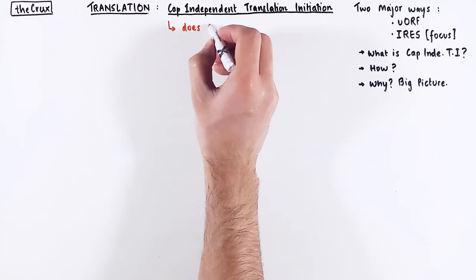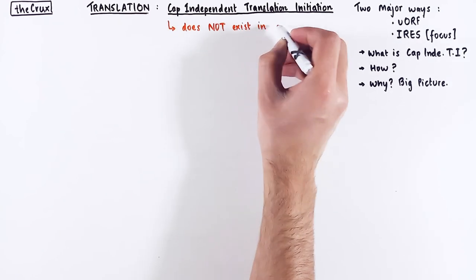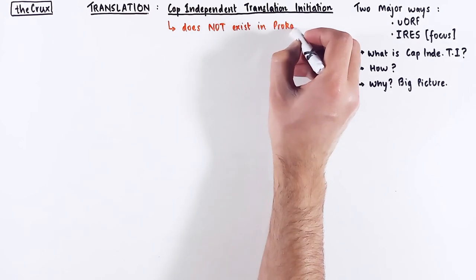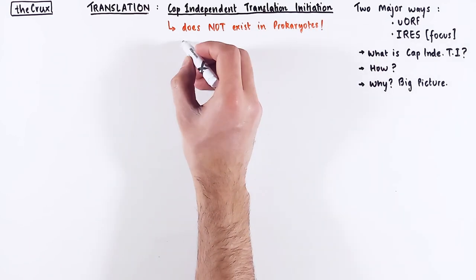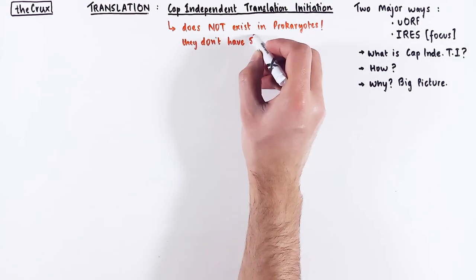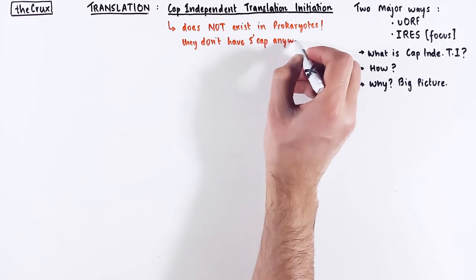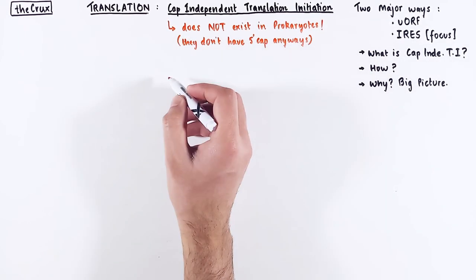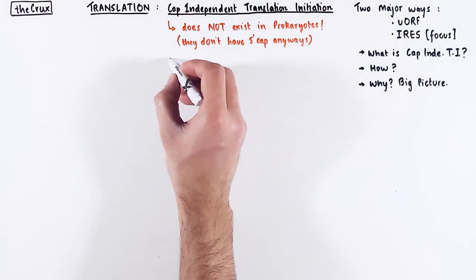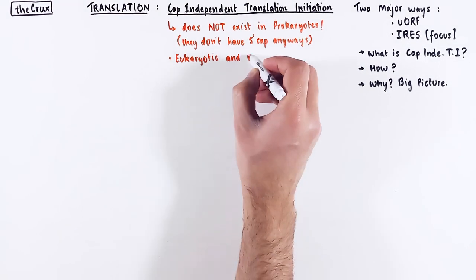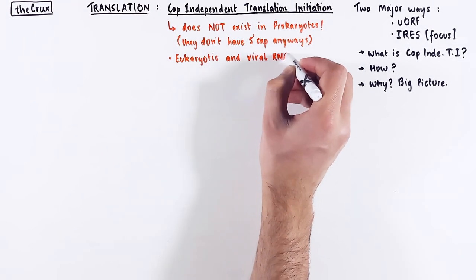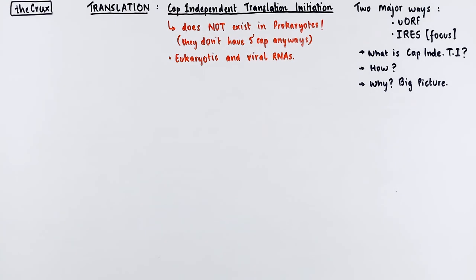CAP-independent translation initiation does not exist in prokaryotes, because they don't have 5' caps in their mRNA. So CAP-independent translation initiation is a property of mRNAs in eukaryotes, as well as viruses. And we'll discuss both of them in this video.